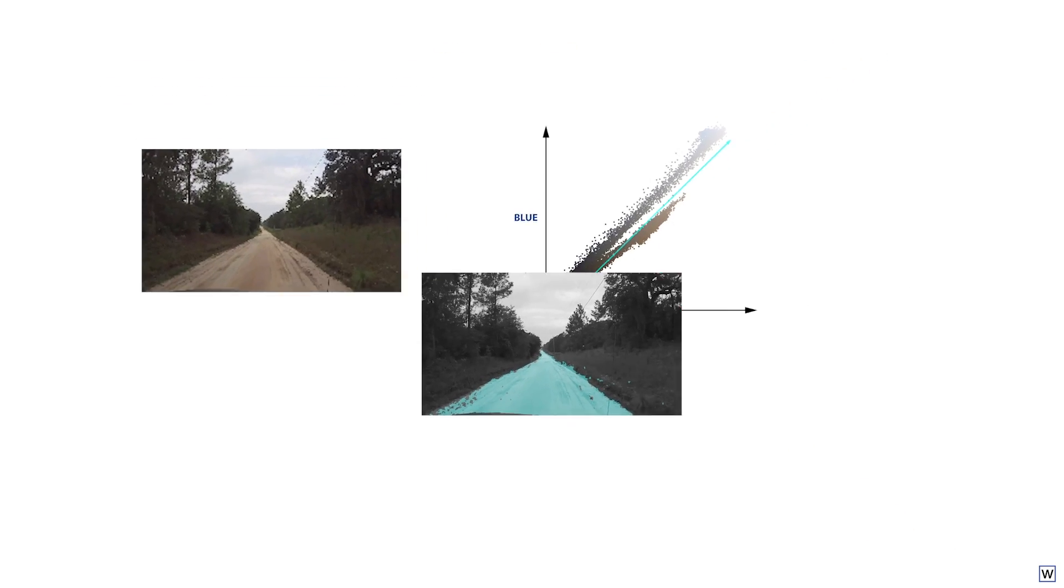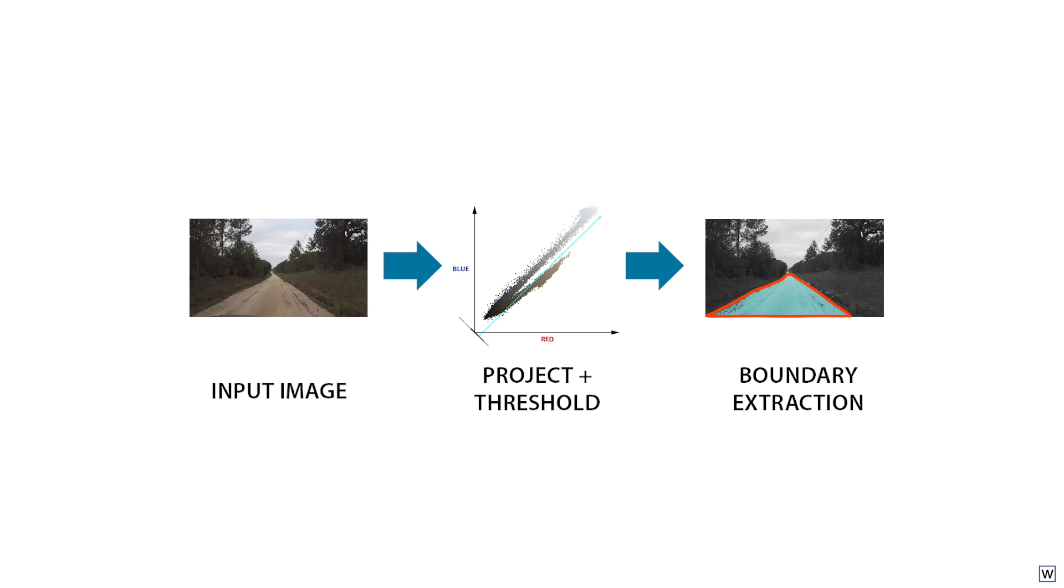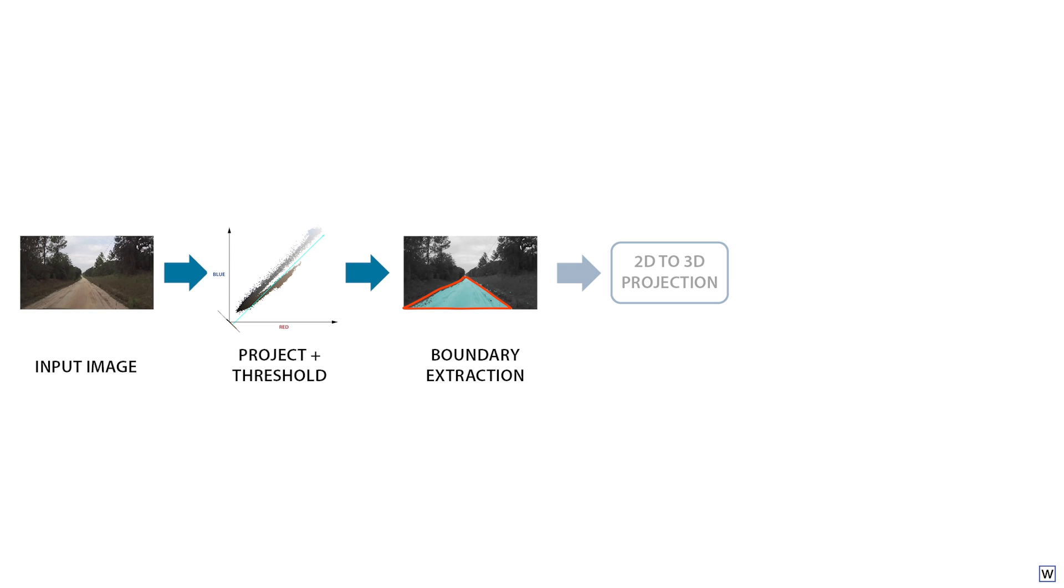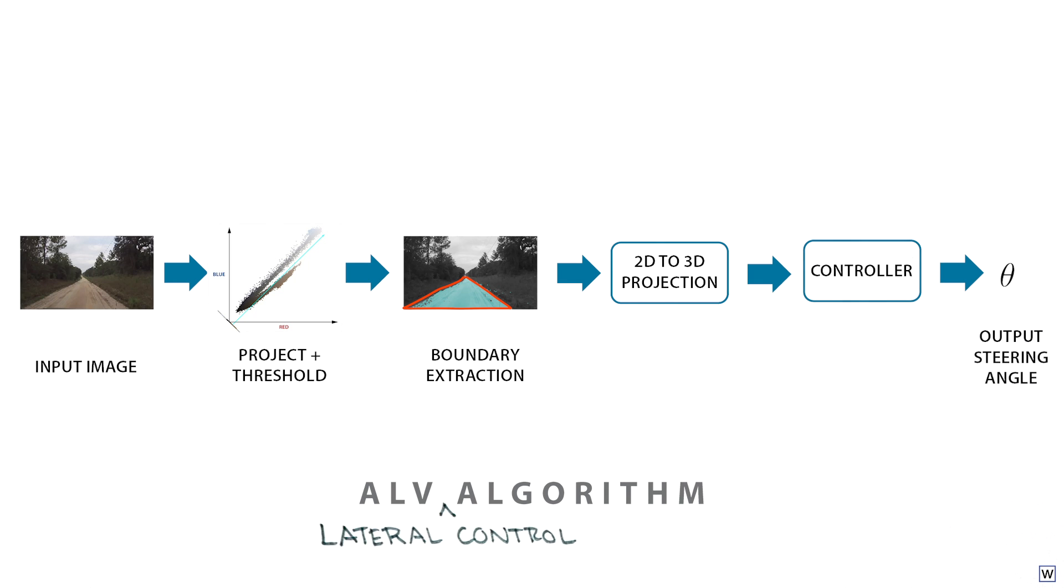These road pixel detections were then used to estimate the location of road boundaries. This information was then projected from image space to world space, and finally fit into a controls algorithm that produced a direction to steer the vehicle. Note that we're just talking about controlling steering, also known as lateral control.